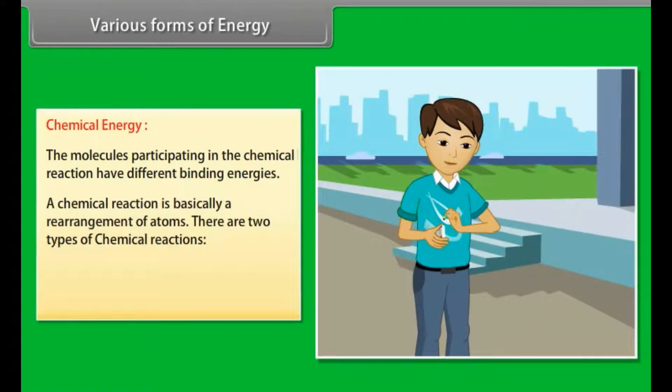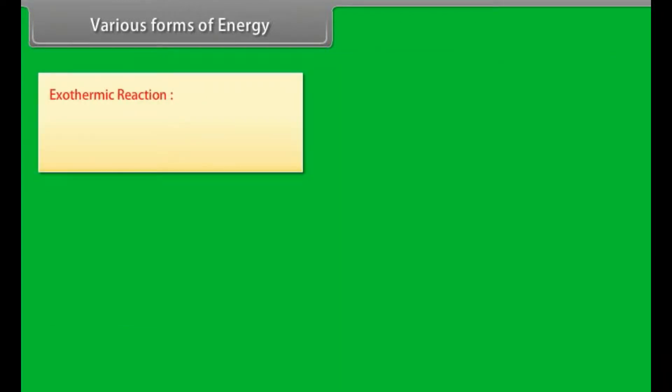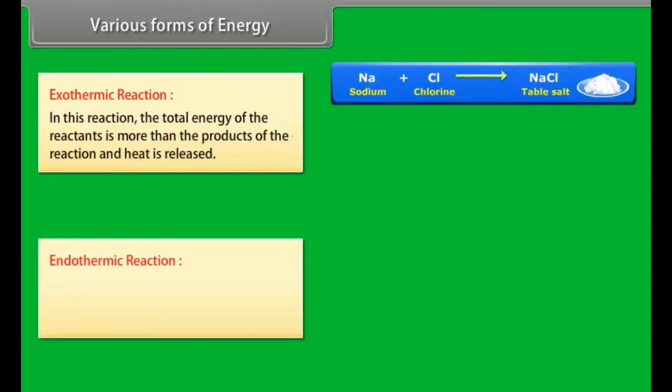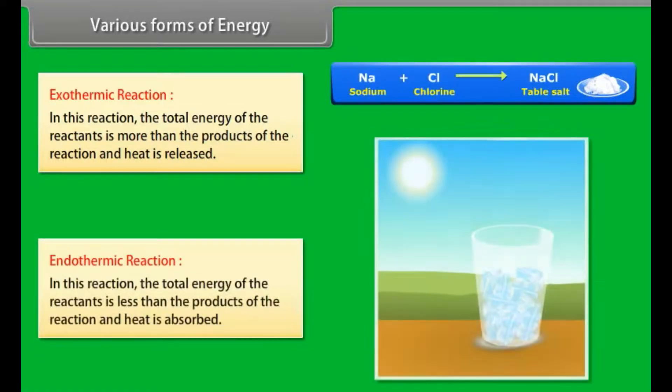Chemical energy. It arises from the fact that the molecules participating in the chemical reaction have different binding energies. A chemical reaction is basically a rearrangement of atoms. There are two types of chemical reactions: Number 1, exothermic reaction, and Number 2, endothermic reaction. Exothermic reaction: in this reaction, the total energy of the reactants is more than the product of the reaction and heat is released. Endothermic reaction: in this reaction, the total energy of the reactants is less than the product of the reaction and heat is absorbed.